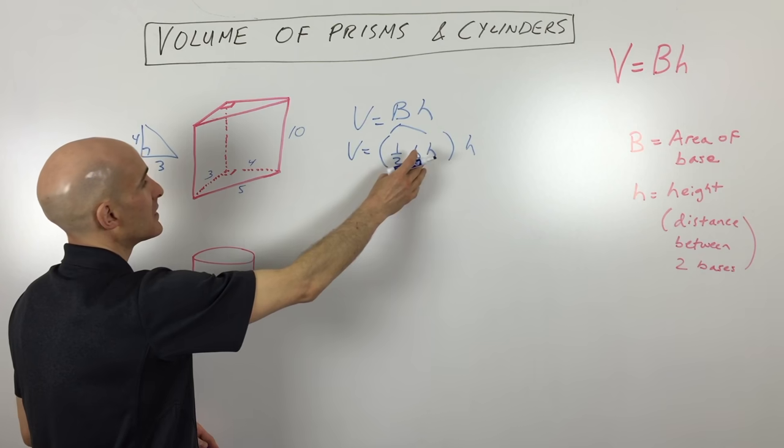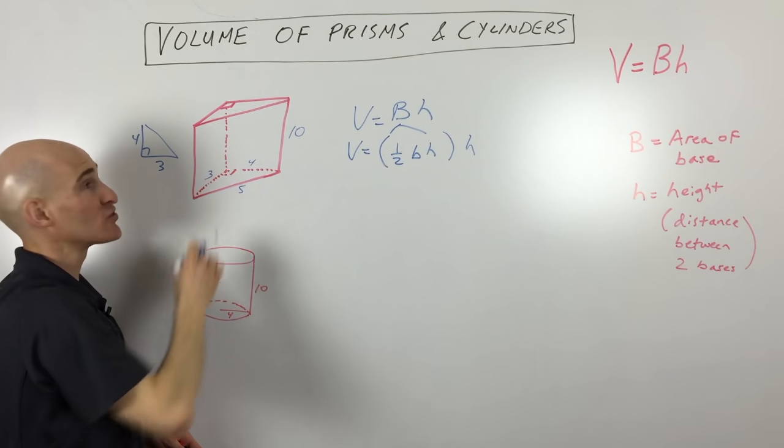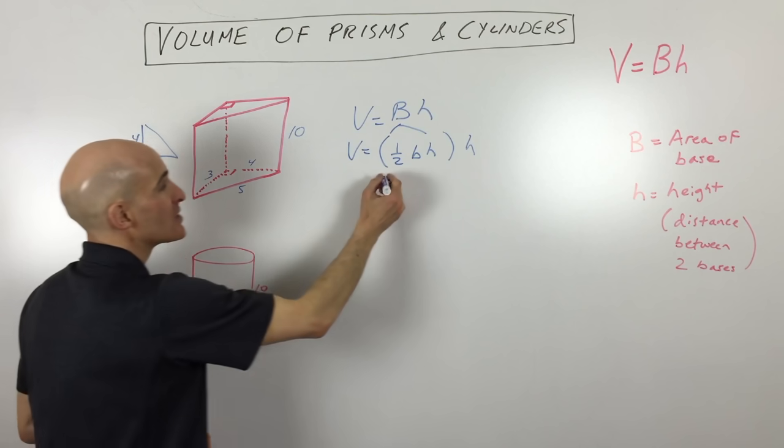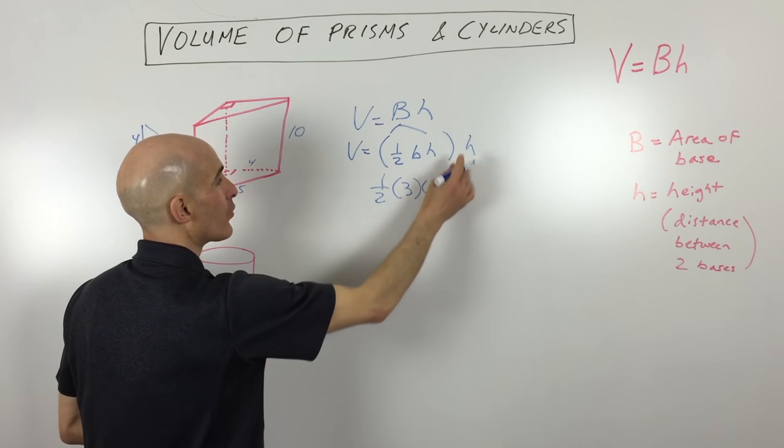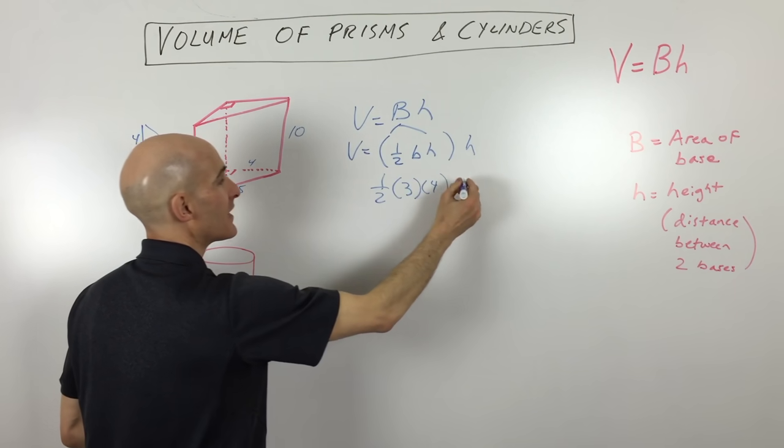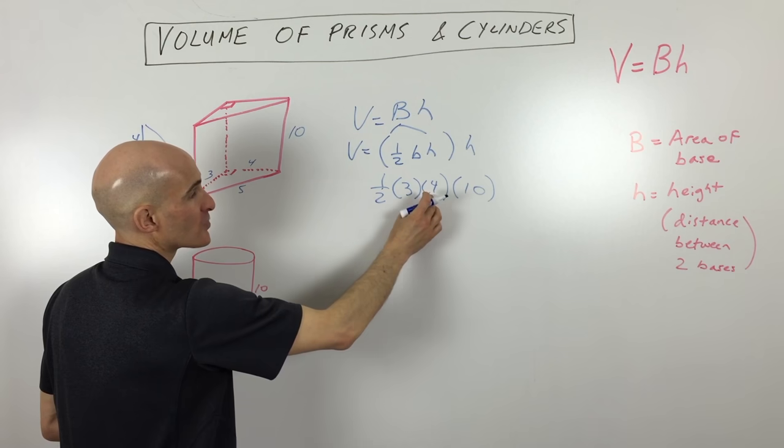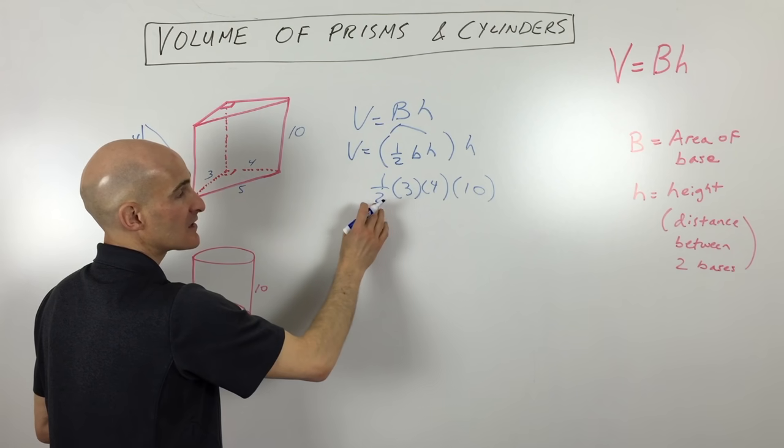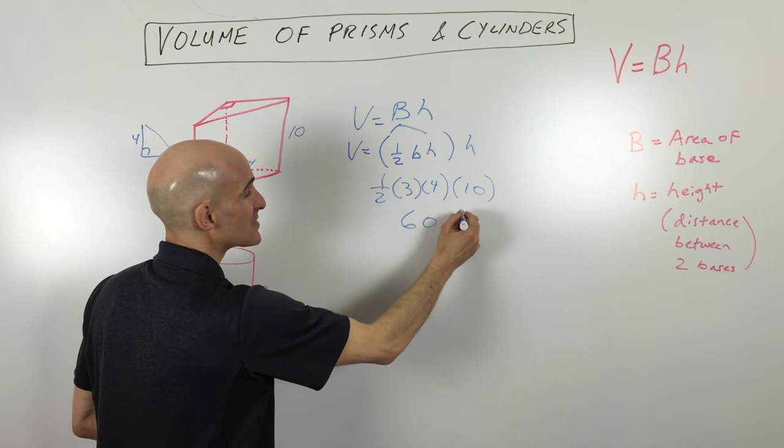And then the height of the overall prism is the 10. That's what's separating the two triangles, the two parallel congruent bases. If we put these values in, we have one-half, 3 times 4, and the overall height is 10. If we multiply all those together, we get 3 times 4 is 12, times 10 is 120, times a half or divided by 2 gives you 60 units cubed.